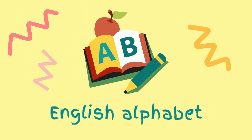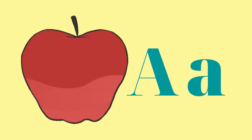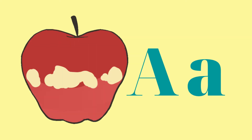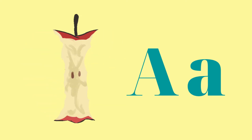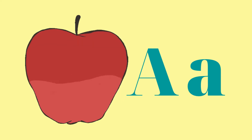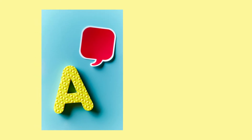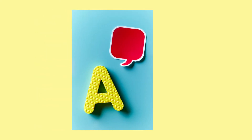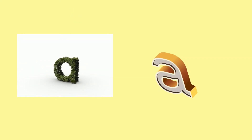Hello everyone! In this video we're going to learn the English alphabet and their sounds, starting with the first letter, which is A. We say A for sound 'ah'. This is capital A, and this is how A is written.